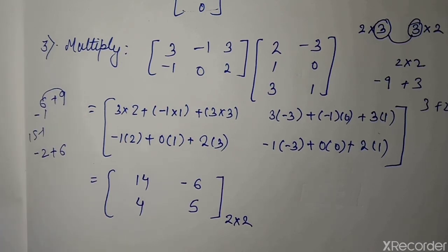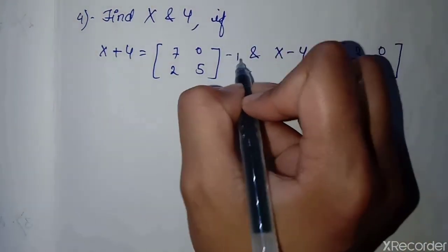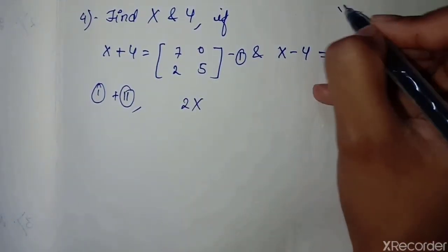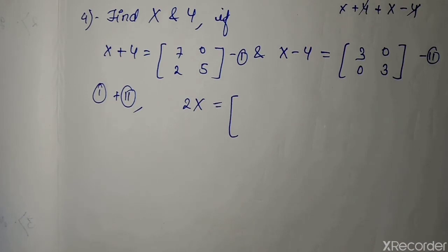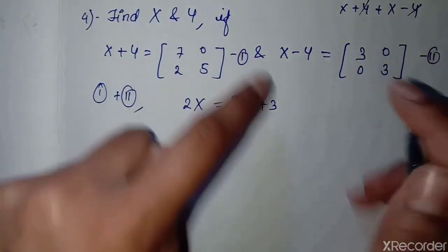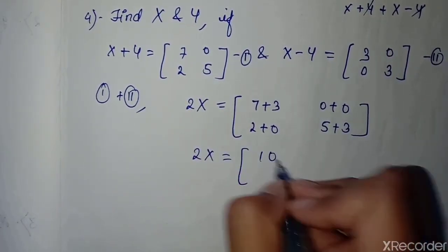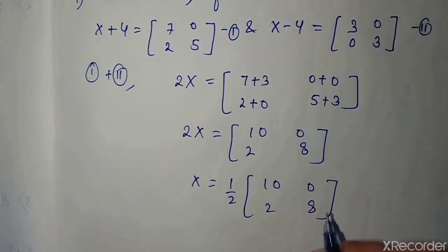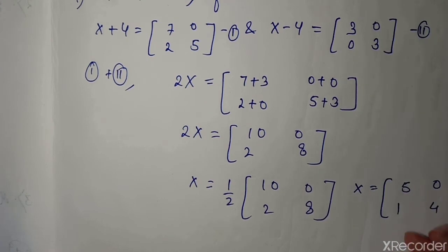Now the next question: find X and Y if X plus Y equals a given matrix and X minus Y equals another given matrix. We label these as equation 1 and equation 2, then add them both. X plus Y plus X minus Y gives 2X (the Y terms cancel), so 2X equals the combined matrix [10, 0, 2, 8]. Dividing by 2, X equals [5, 0, 1, 4].